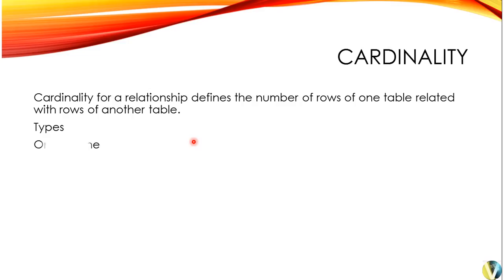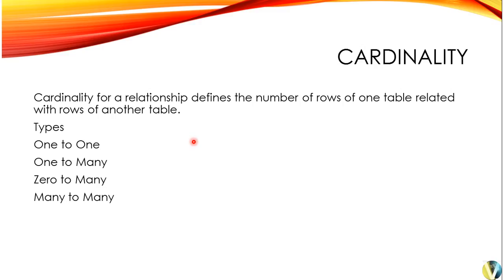The types of cardinality are 1 to 1, 1 to many, 0 to many, and many to many. This depends on your requirement, whether you want a 1 to many, 0 to many, or many to many relationship.